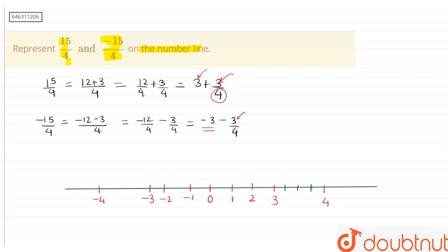1, 2, 3. Now, we have to choose the third one. So, this is the third one. So, this is the place where it represents 3 + 3/4, which is equal to 15/4.